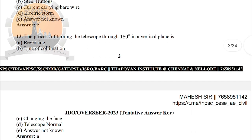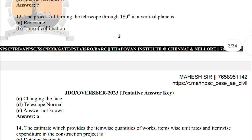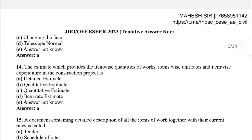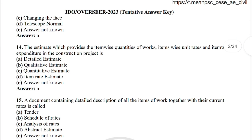Next: the process of turning the telescope through 180 degrees in the vertical plane is — the correct answer is option A: reversing.